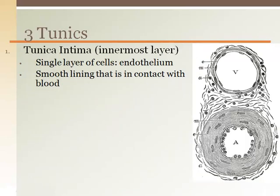The general structure of blood vessels is the same, with the exception of capillaries. Blood vessels have three layers called tunics, where capillaries only have one. The three layers are the tunica intima, tunica media, and the tunica externa. The tunica intima is the innermost layer, more commonly known as the endothelium. This layer is a single layer of cells that are very dynamic.